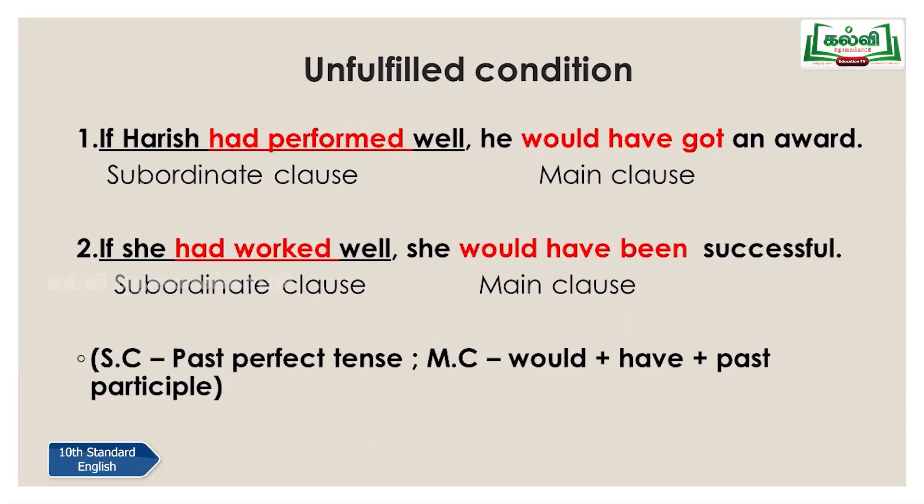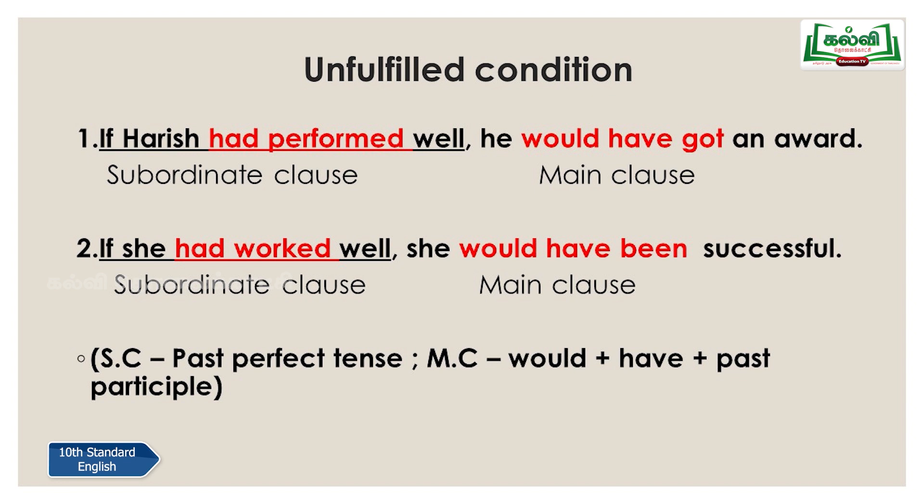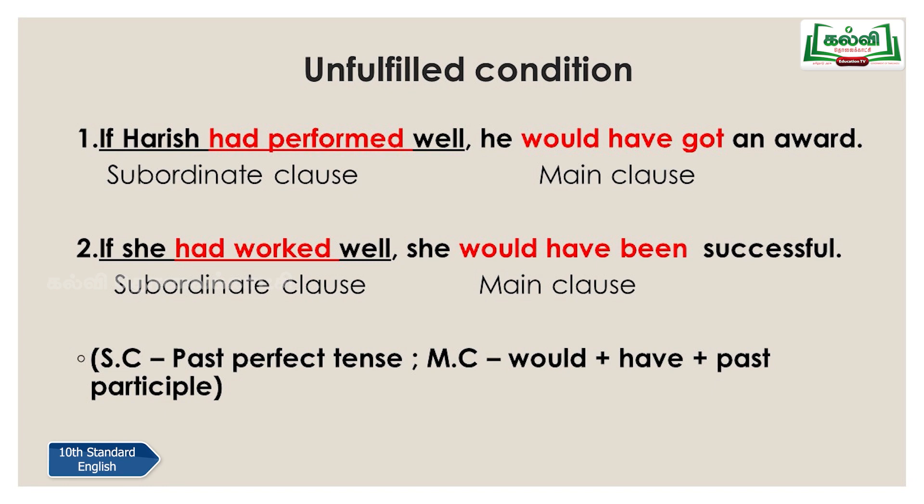The final type is the unfulfilled condition. As the name says, something was not fulfilled — something that would not happen in the past, yet we imagine what would have happened. For example: 'If Arish had performed well, he would have gotten an award.' In the subordinate clause, we have 'had + past participle' (past perfect tense). In the main clause: 'would + have + past participle' — 'would have gotten'.